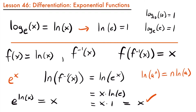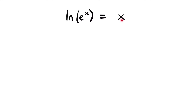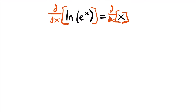Now, to get to the topic of this video: how would we take the derivative of the exponential function e to the power of x? We are going to use the equation that the natural log of e to the power of x equals x, and take the derivative with respect to x of both sides. The derivative of the natural log of u is 1 divided by u times u prime.